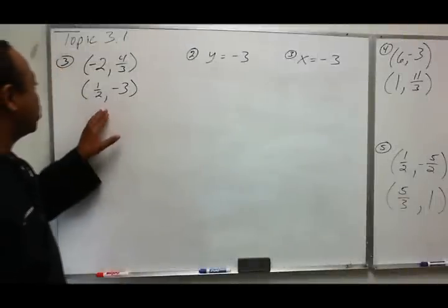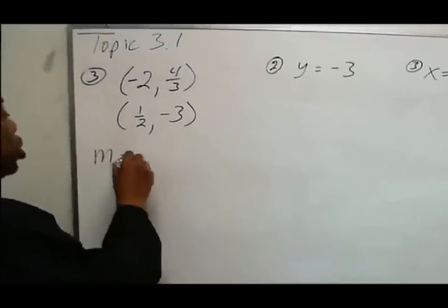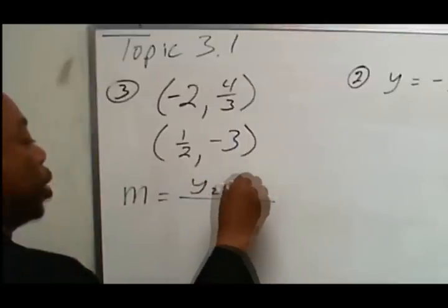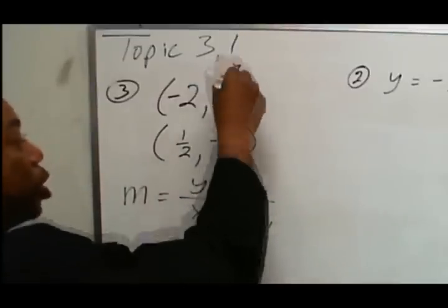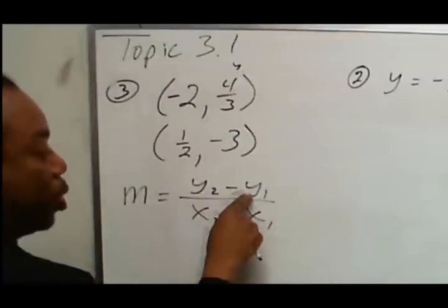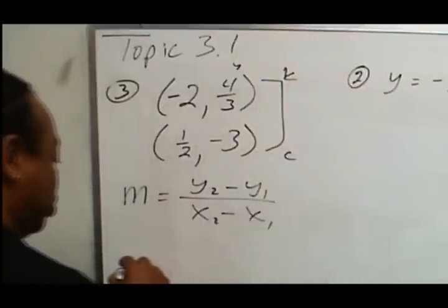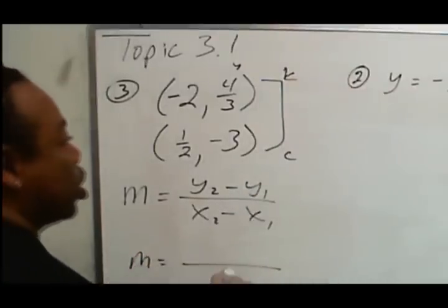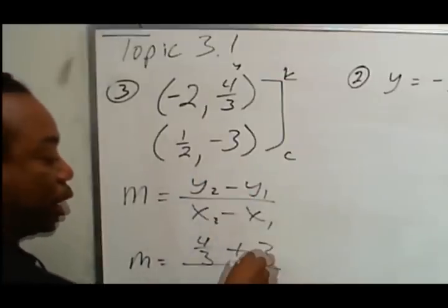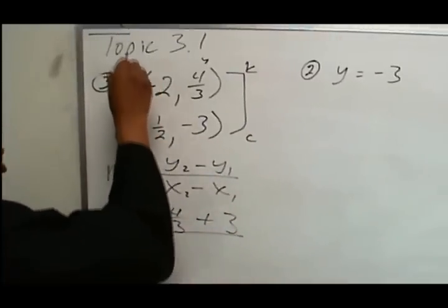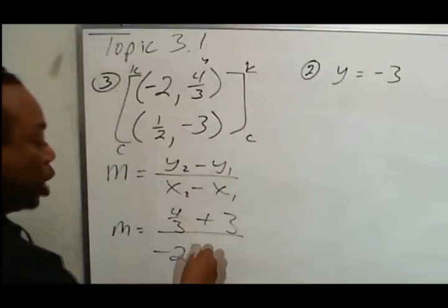Topic 3.1. We're going to find the slope between these two points. The slope formula uses y2 minus y1 over x2 minus x1. For the y's, we're going to keep and change — keeping the positive 4 thirds but changing the negative 3 to a positive 3. For the x's, we're also going to keep and change — keep the negative 2 and change this to a negative 1 half.